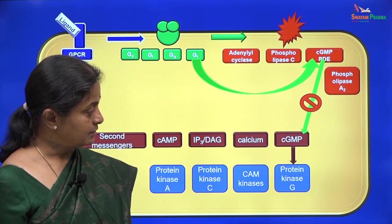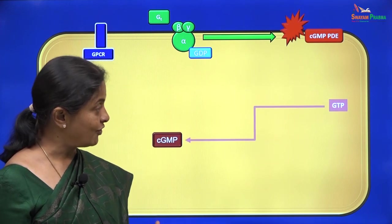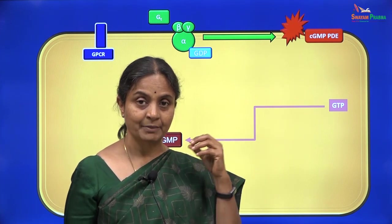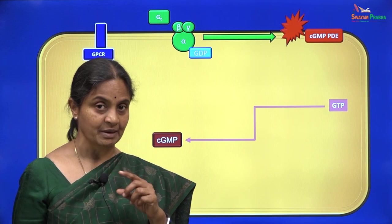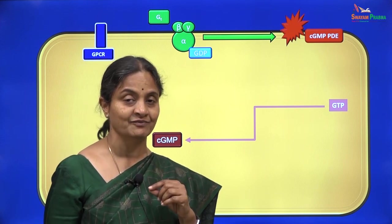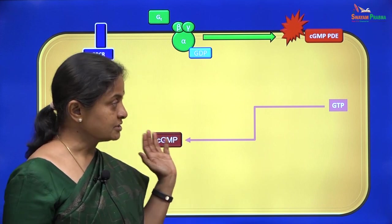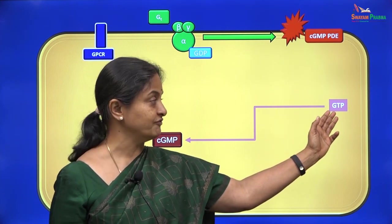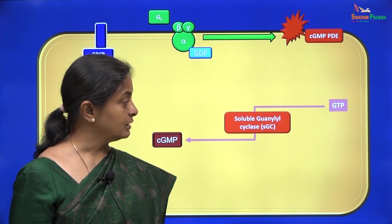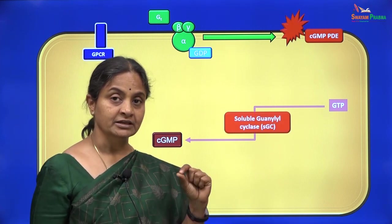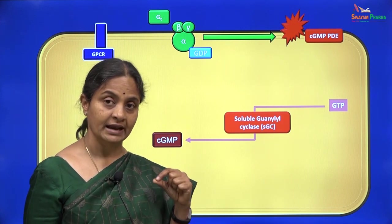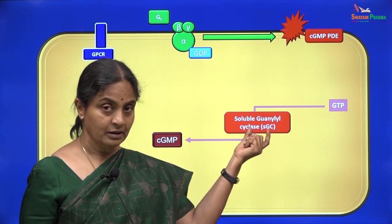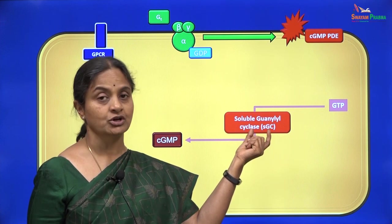Let us first see how cGMP is formed in the cell. Just like cyclic AMP is formed from ATP by the action of adenylyl cyclase, cyclic GMP comes from GTP or guanosine triphosphate, under the action of a guanylyl cyclase enzyme. The difference from adenylyl cyclase is that while adenylyl cyclase was a membrane enzyme, this type of guanylyl cyclase is a cytosolic enzyme.